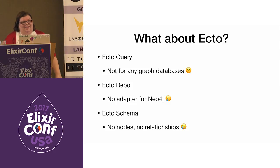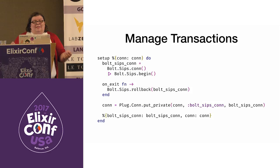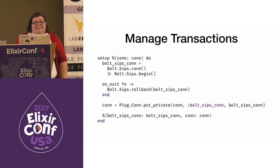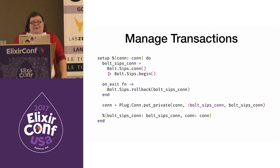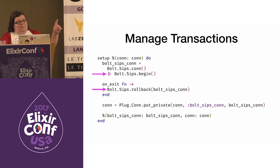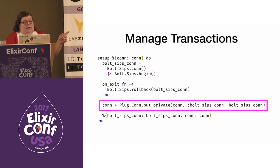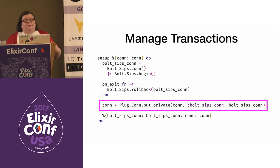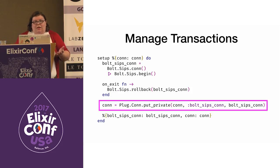We can't use EctoAdapter SQL sandbox because there's no EctoAdapter and there isn't any SQL. So instead we have to manage the transactions ourselves. Florin, the maintainer of Bolt Sips, was kind enough to open a PR to make these transactions into a case template. We begin and roll back transactions just like in SQL, and a 'con' parameter puts the Bolt Sips connection into the plug connection so the controller can use the Bolt Sips connection already in the transaction. This way the tests don't pollute the database.